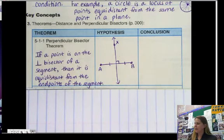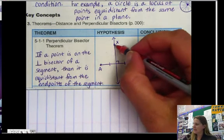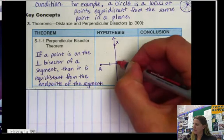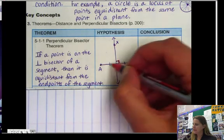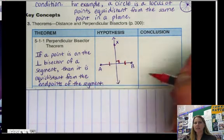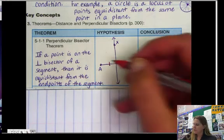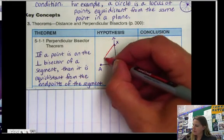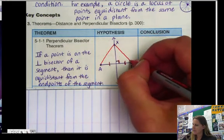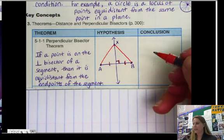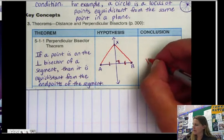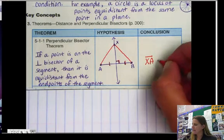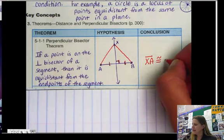So here we have point x is on the perpendicular, which is there, bisector, so that's here, of segment AB. So therefore, if I were to draw lines or segments from x to the endpoints, my conclusion would be xA is congruent to xB.